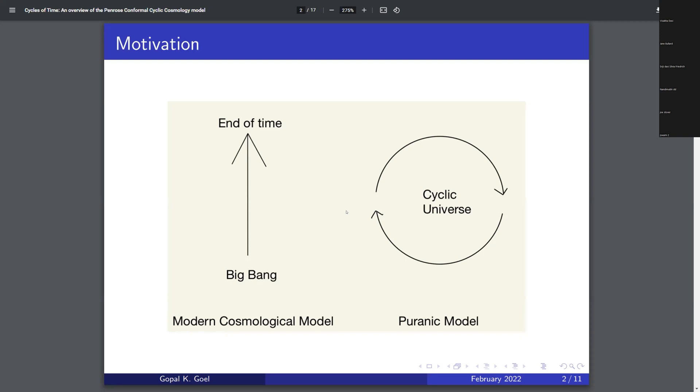recently there have been more interest in cyclic cosmological models in the mainstream scientific community, and in particular, Roger Penrose's conformal cyclic cosmology is one of the very important cyclic models, and I'll touch upon why it's special in scientific discussions. But in this talk, I'm just going to be giving an overview of Roger Penrose's cyclic universe model.